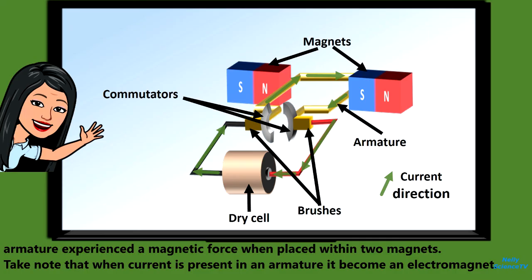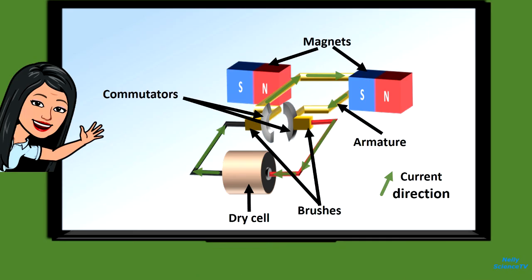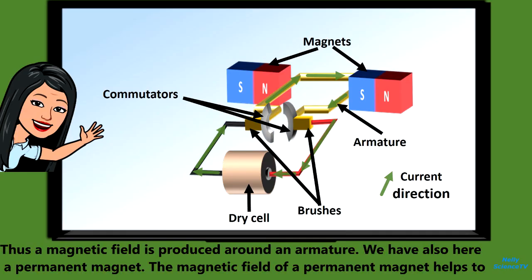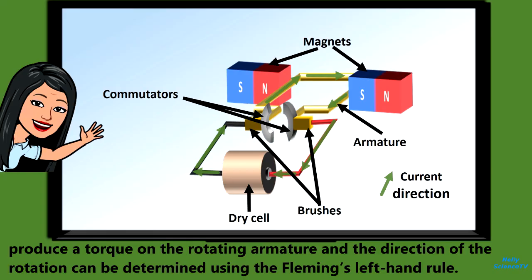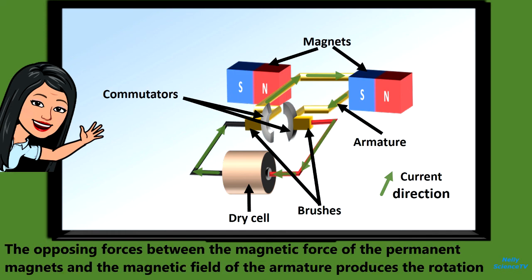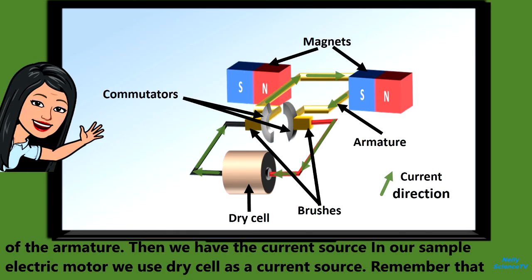Take note that when current is present in an armature, it becomes an electromagnet, and thus a magnetic field is produced around the armature. We also have a permanent magnet. The magnetic field of the permanent magnet helps to produce a torque on the rotating armature, and the direction of rotation can be determined using Fleming's left-hand rule. The opposing forces between the magnetic force of the permanent magnets and the magnetic field of the armature produce the rotation of the armature.